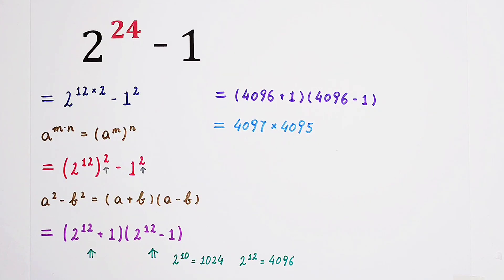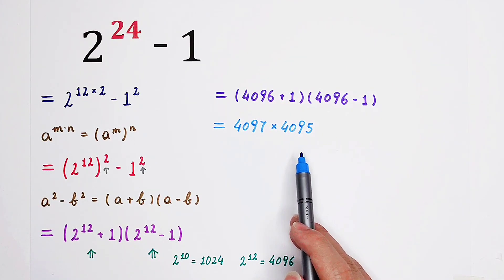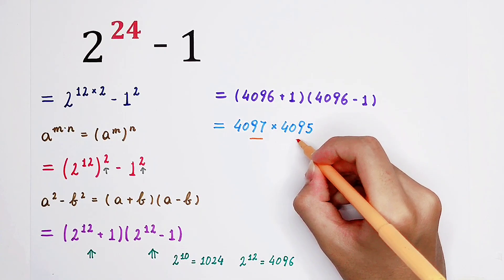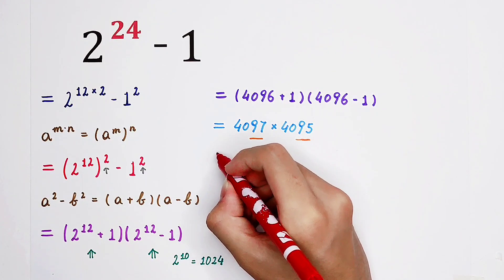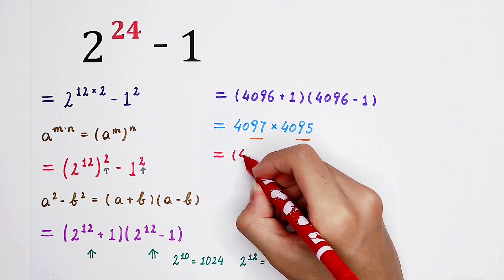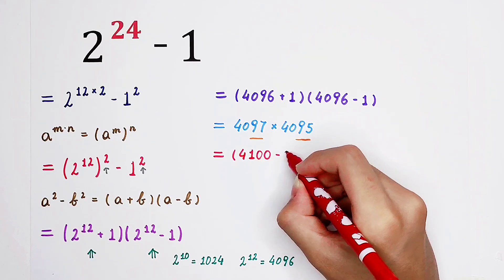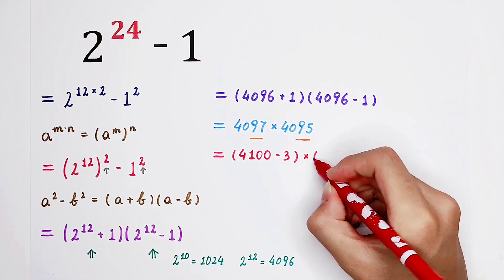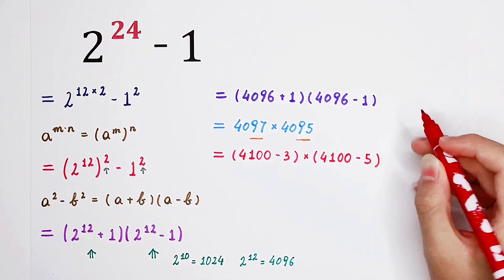How can we evaluate? How can we calculate the product of 4097 and 4095? That's a question. 4095. They are close to 4100. So we can rewrite these two guys. We can substitute 4100 minus 3 for 4097, and 4100 minus 5 for 4095.